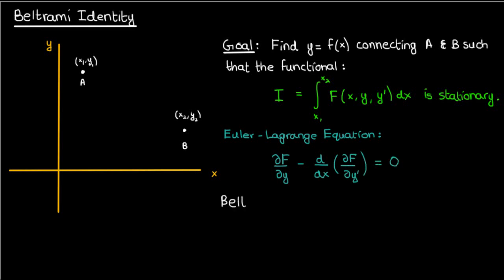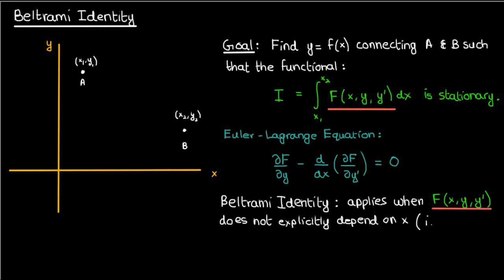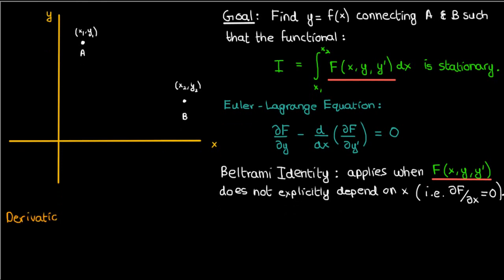Now the Beltrami identity is a special case that comes from the Euler-Lagrange equation, and it applies when our capital F, the quantity inside the integrand of the functional, does not explicitly depend on x. In other words, its partial derivative with respect to x is 0. So let's go ahead and derive the Beltrami identity.